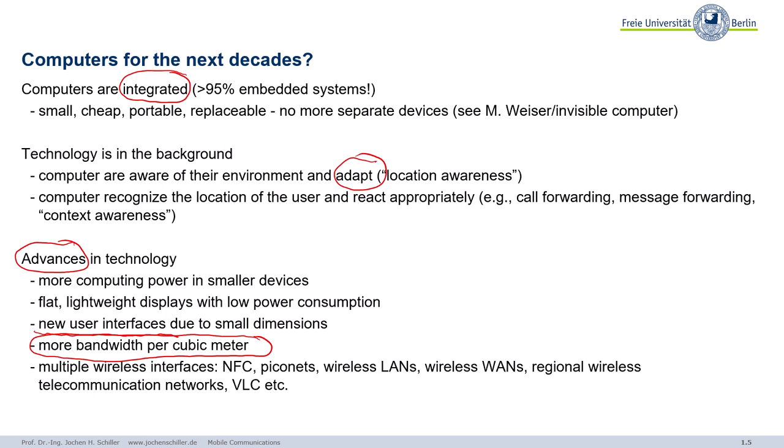Wide area networks like cellular networks, but also highly specialized networks like packet radio, Tetra systems. We have many different, more regional and more global wireless telecommunication networks, satellite networks. And then we also have something like visible light communication — the old Greeks already used visible light communications — but it can easily transmit hundreds of megabits per second. In the next decades, we'll see more integrated embedded systems and fewer conventional user interfaces.